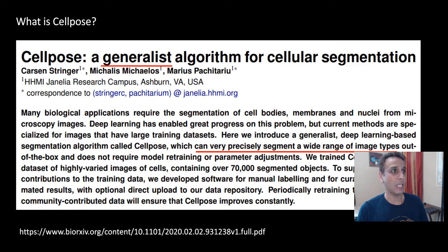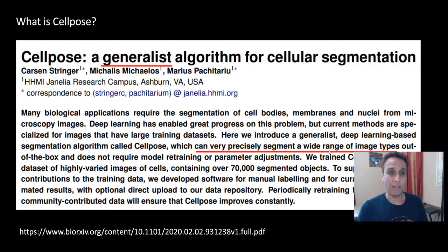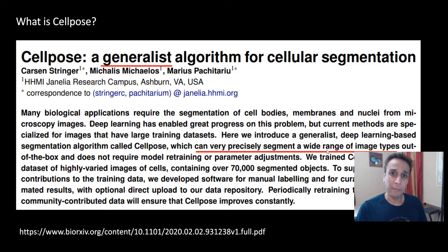First of all, what is Cellpose? It's a generalist algorithm for cellular segmentation. They call it cellular segmentation, but it can work for other images also, which we'll see later on. The initial paper's focus was on cellular segmentation. Generalist means it can very precisely segment a wide range of image types — not just fluorescence or certain cell images. You can dump a whole bunch of diverse-looking images and it generalizes well.